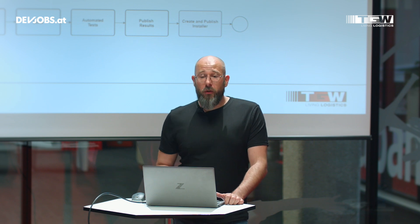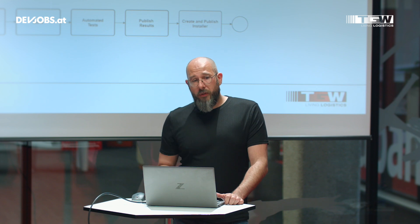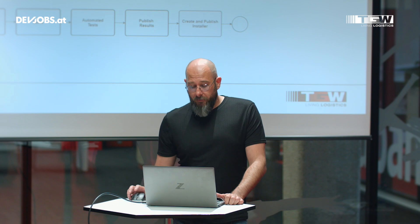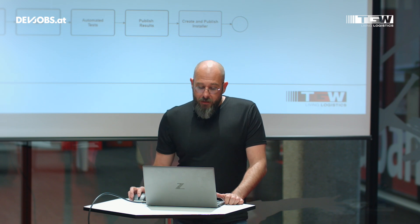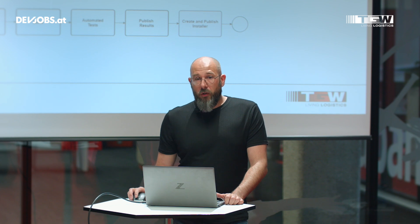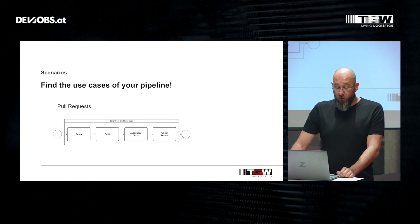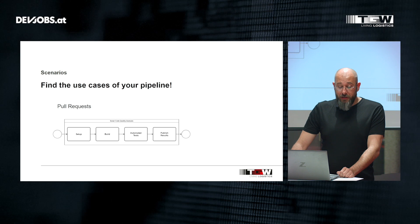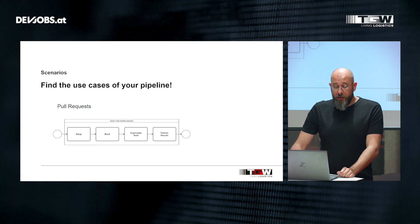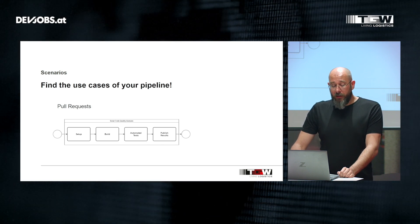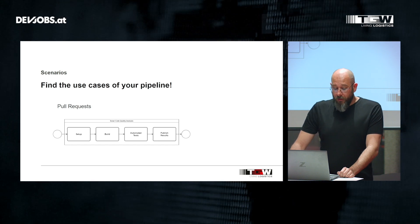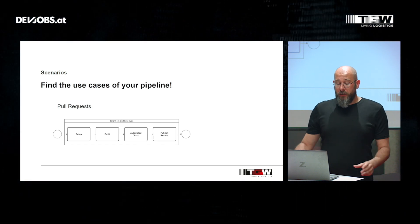They don't care about the code quality, because in a pull request afterwards the code quality will be checked anyways. This scenario happens maybe a few times a day. And then we come to the most frequent scenario: the pull request itself. It consists of the four typical stages, but it is enclosed in an extensive code quality analysis. So now we have all our scenarios.